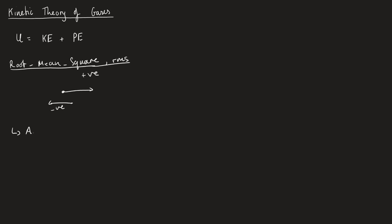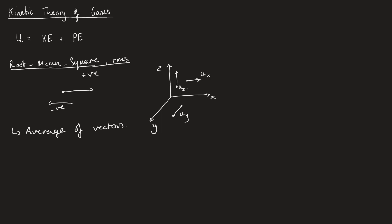So the root mean squared is basically just an average of vectors — it doesn't matter what direction they're travelling in. Now, the way we calculate a root mean square: if I imagine a three-dimensional plane, I'm going to have z here, x here, and y here — so this is just a 3D coordinate system. I'm going to imagine anything moving in the positive x direction has a speed of ux, anything moving in the positive y direction has a speed of uy, and anything moving in the positive z direction has a speed of uz.